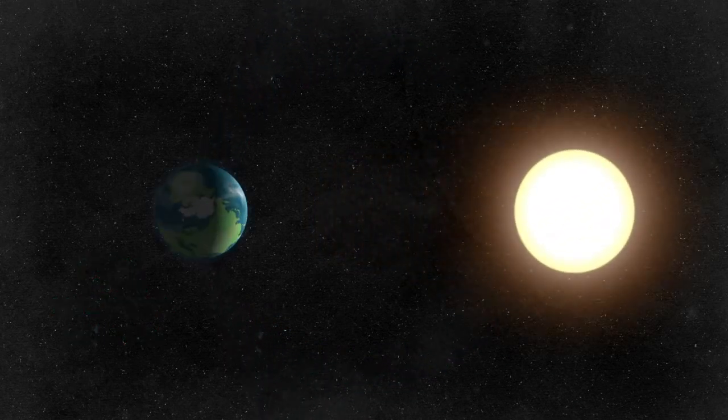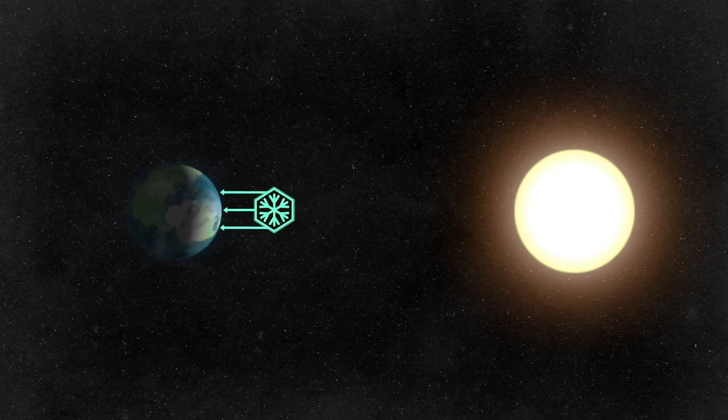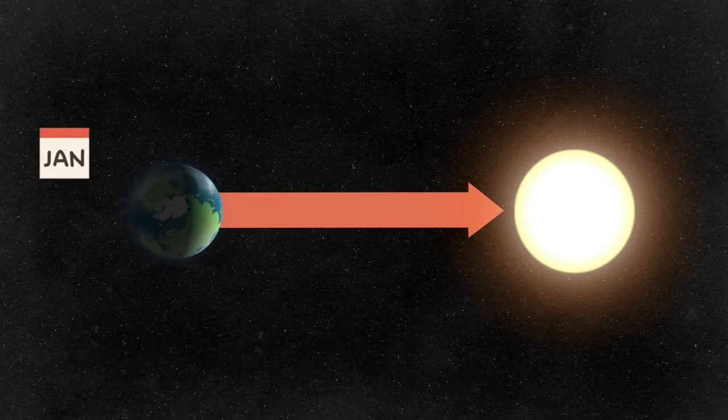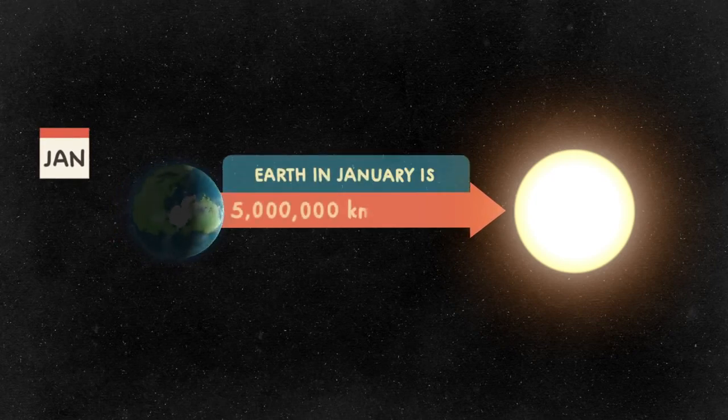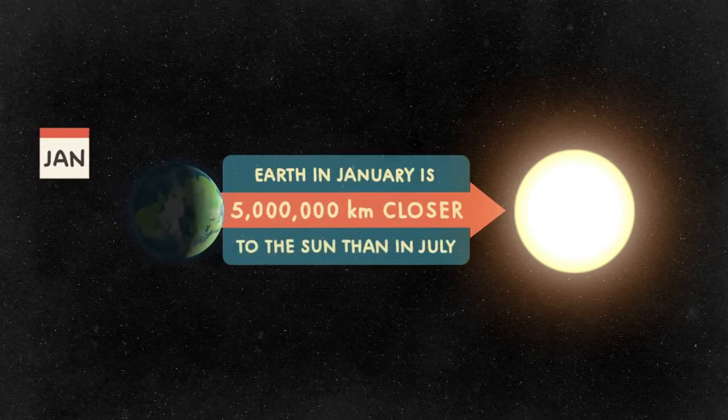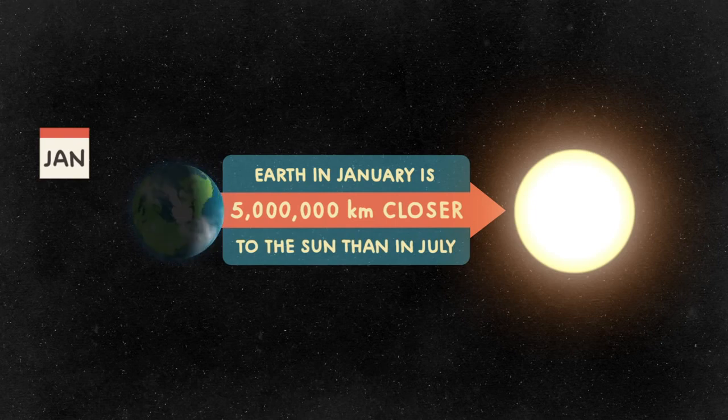Aha! So winter happens when the Earth is further away from the Sun. Well, no, not so fast. The Earth is actually closer to the Sun in January than we are in July, by five million kilometers. January is smack dab in the middle of the coldest season of the year for those of us up north.